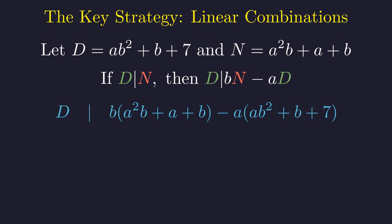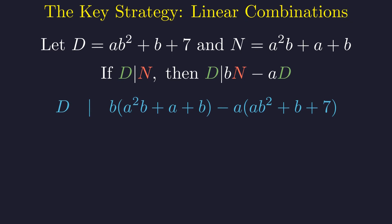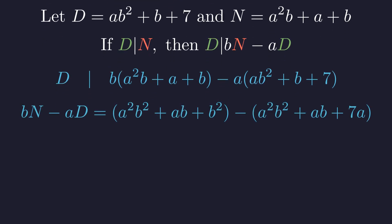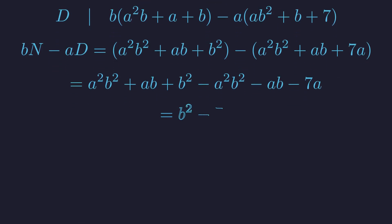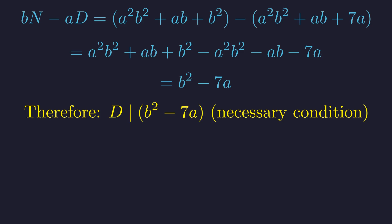Substituting the full expressions for n and d back into our combination, we see that d must divide this new expression. The first term, b times n, expands to a squared b squared plus ab plus b squared. The second term, a times d, expands to a squared b squared plus ab plus 7a. Distributing the negative sign sets up the cancellation: the a squared b squared terms cancel and the ab terms cancel. The only remaining terms are b squared minus 7a. Therefore, our original condition implies that d must divide b squared minus 7a.